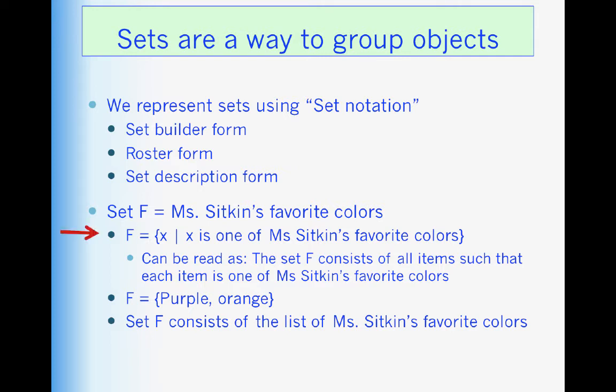Quick example. This first example is set F. Now set F is going to be the set that contains my favorite colors. So set builder form would look like this. F is equal to, and then you've got a curly brace, X, and then a bar. X is one of Ms. Sitkin's favorite colors. And then a closed curly brace.